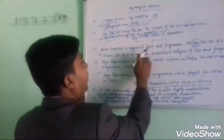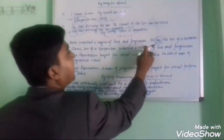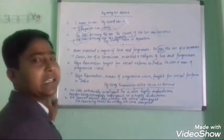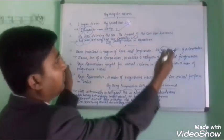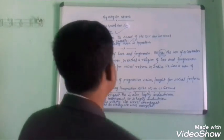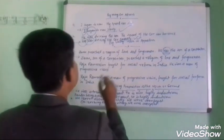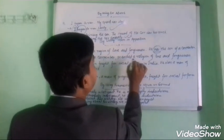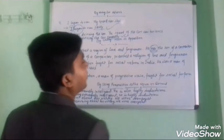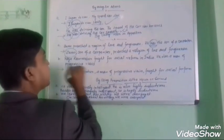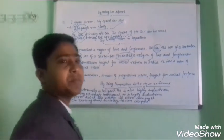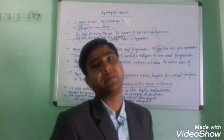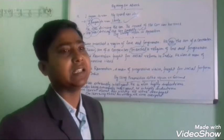'Jesus, son of a carpenter, preached a religion of love.' In this new joined sentence, 'Jesus' is the subject and 'preached' is the finite verb — one subject, one finite verb. It is a simple sentence.